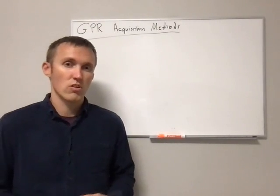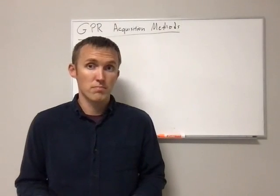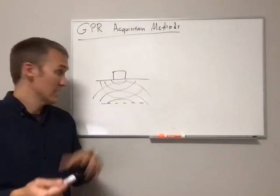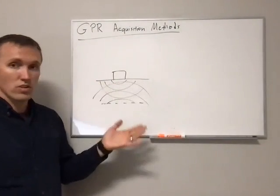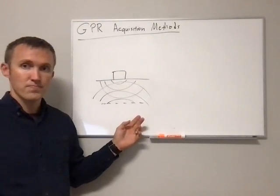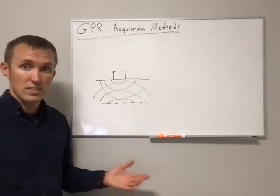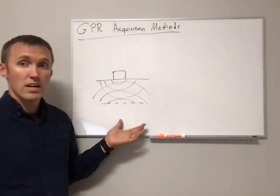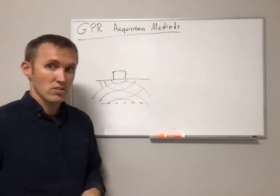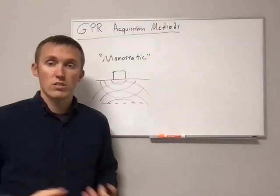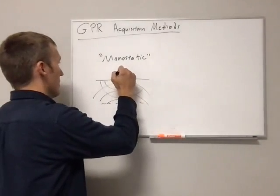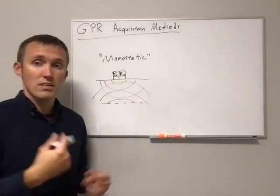In the last video we focused on one particular type of GPR system called a monostatic system. We have an antenna sitting on the ground, transmitting a radio wave pulse down to the subsurface. It interacts with a layer boundary — a contrast in dielectric properties and conductivity — and we get a return signal picked up by the system. This is a monostatic system: one unit containing both the transmitting (TX) and receiving (RX) parts.